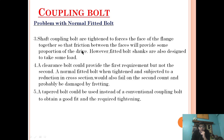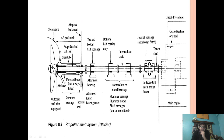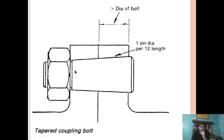However, fitted bolts are also designed to take some load. A clearance bolt could provide the first requirement — transmission of force — but not the second. The fitted shank bolt is also designed to take some load, whereas a clearance bolt cannot. A normal fitted bolt when tightened and subjected to a reduction in cross-section could also fail and probably be damaged by fretting. A taper bolt can be used instead to obtain a good fit and the required tightening.